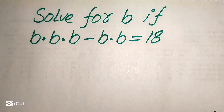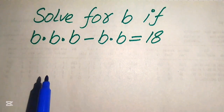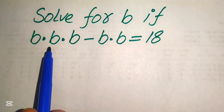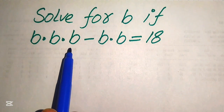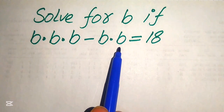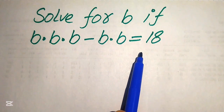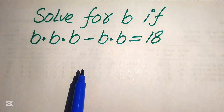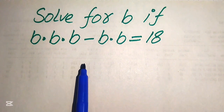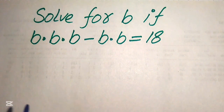Hello everyone, welcome. Let's solve this algebra problem: b multiplied by b multiplied by b, minus b multiplied by b, equals 18. We will solve this problem for the values of b.